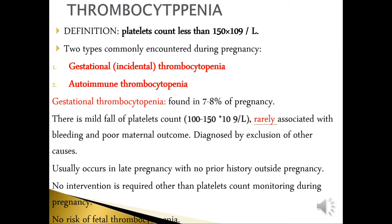Gestational thrombocytopenia is found in 7–8% of pregnancies. It is a mild form with platelet count between 100 and 150. It is rarely associated with bleeding and poor maternal outcome. It is diagnosed by exclusion of other causes, usually occurs in late pregnancy with no prior history outside pregnancy. No intervention is required other than platelet count monitoring, and there is no risk of fetal thrombocytopenia.